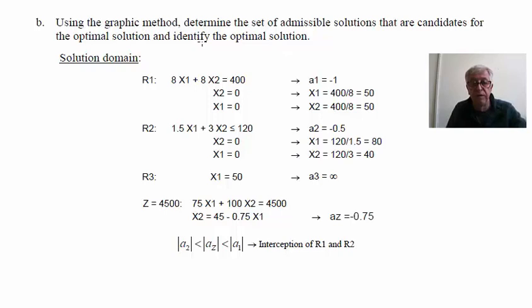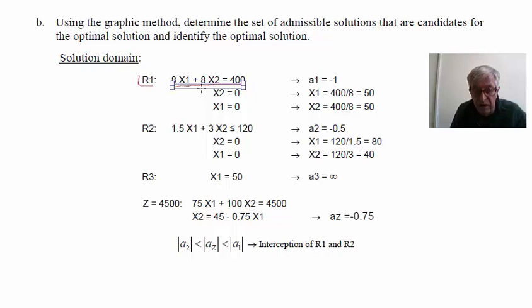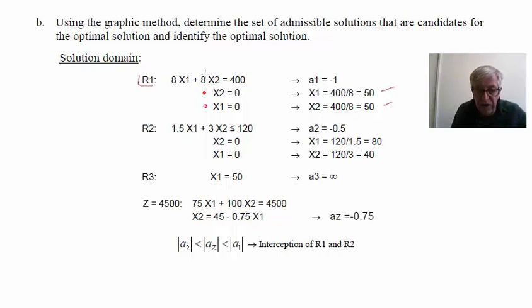In the second question, we need to present the optimal solution using the graphical method. We evaluate the solution domain starting with restriction 1. The boundary intersects the horizontal axis at x1 = 50 (setting x2 = 0) and the vertical axis also at 50 (setting x1 = 0). The inclination of this line is minus the coefficient of x1 divided by the coefficient of x2, giving an inclination of minus 1.